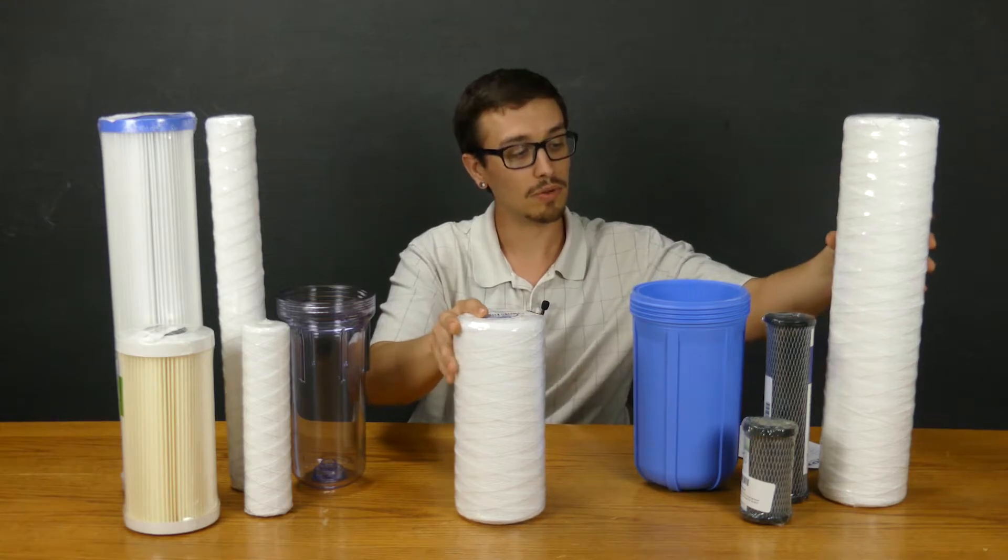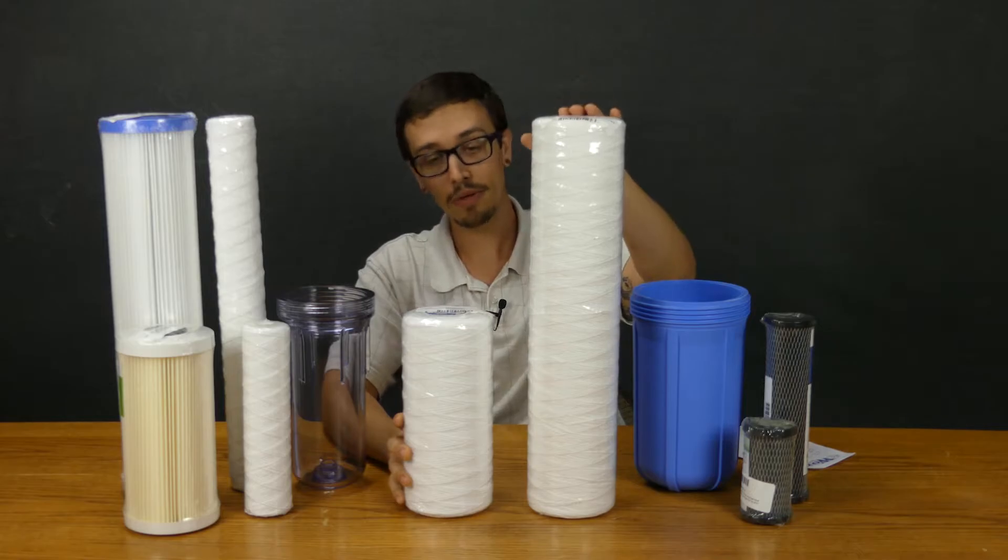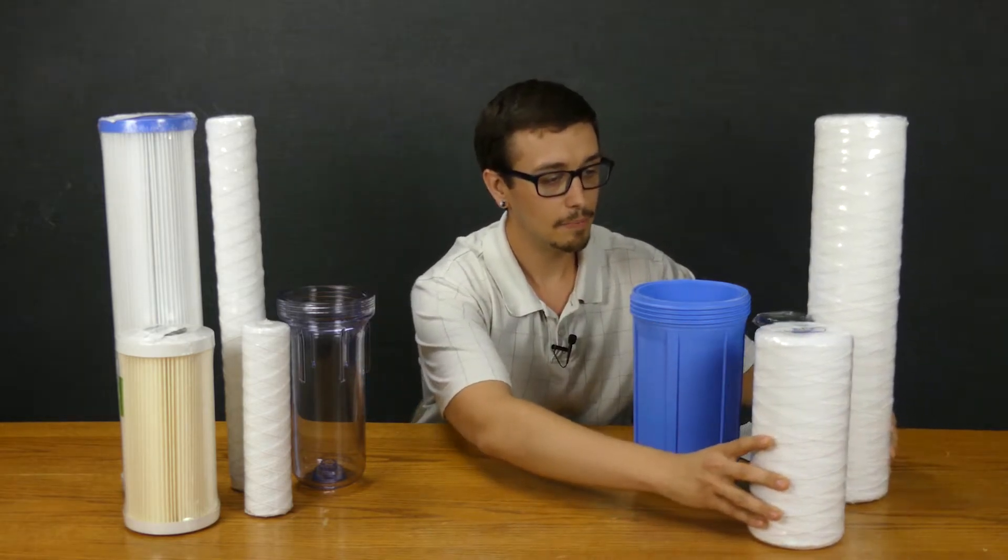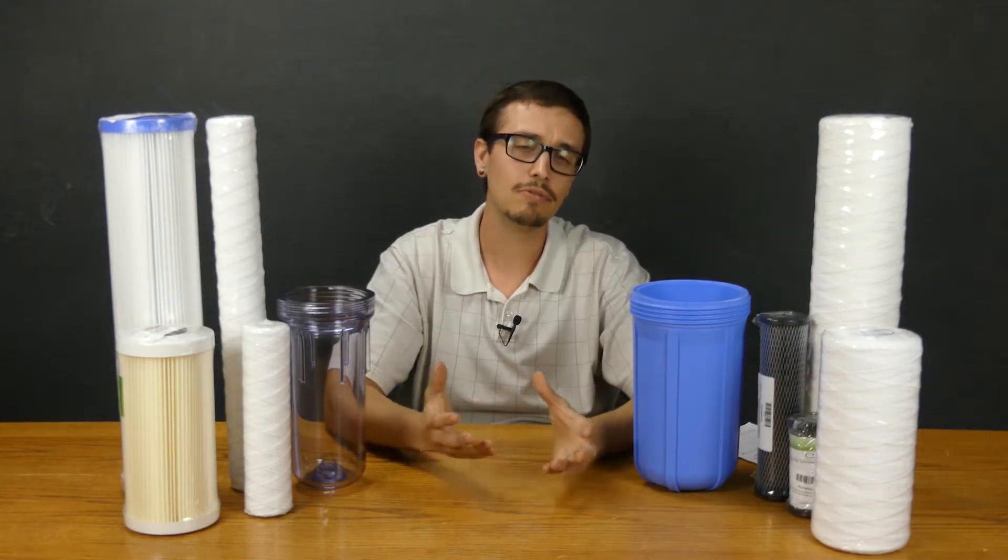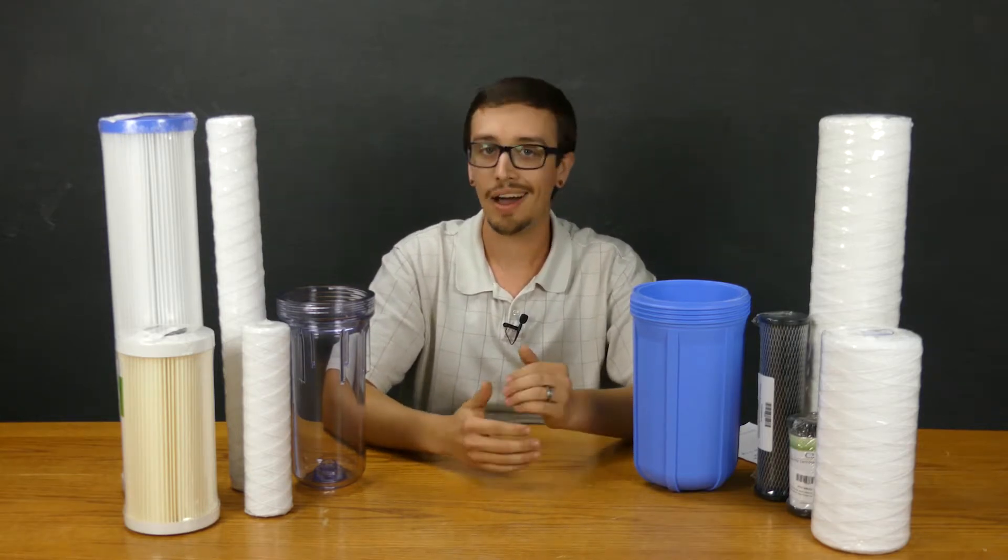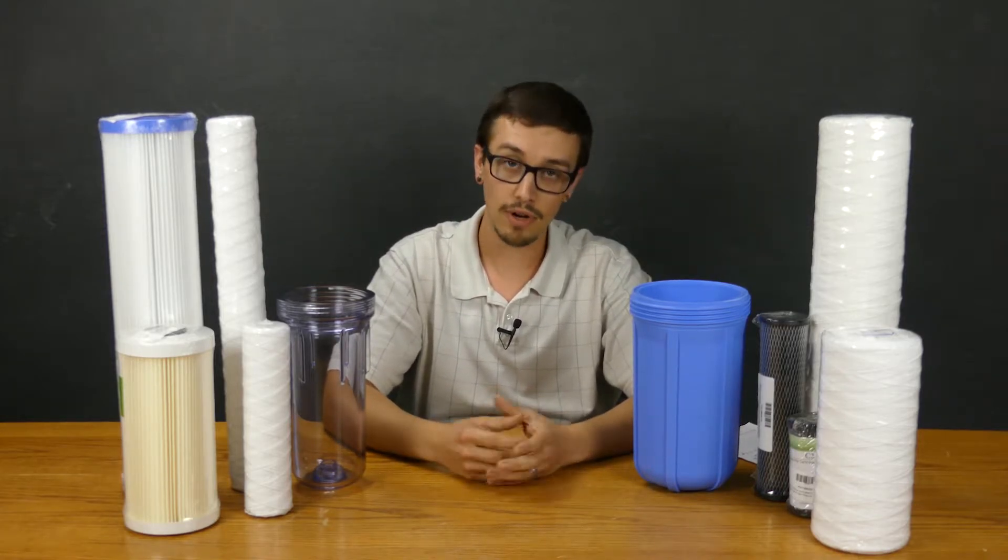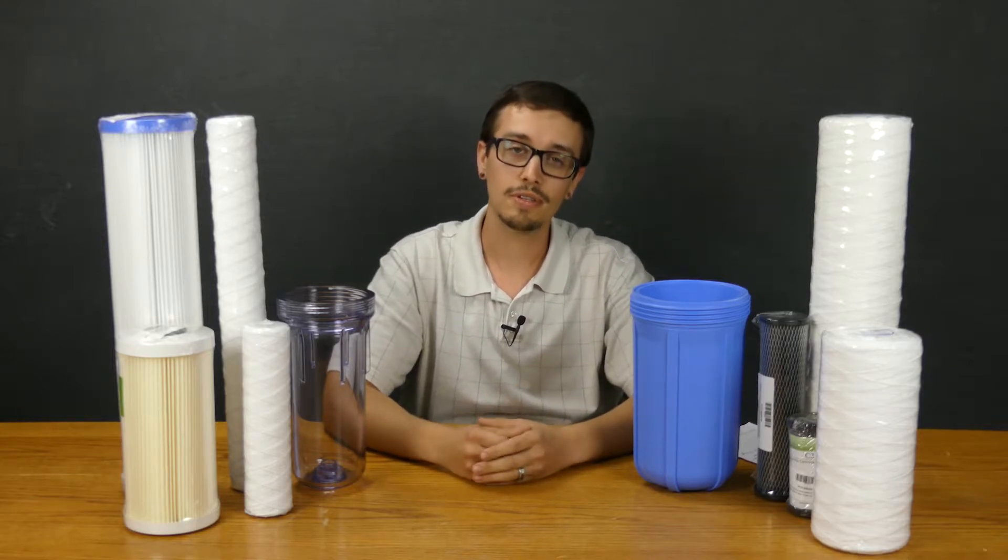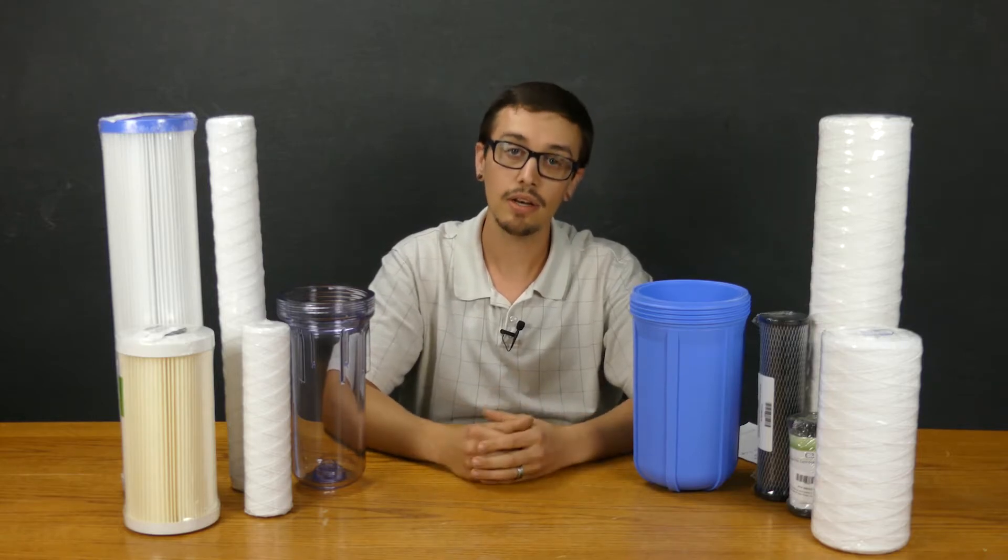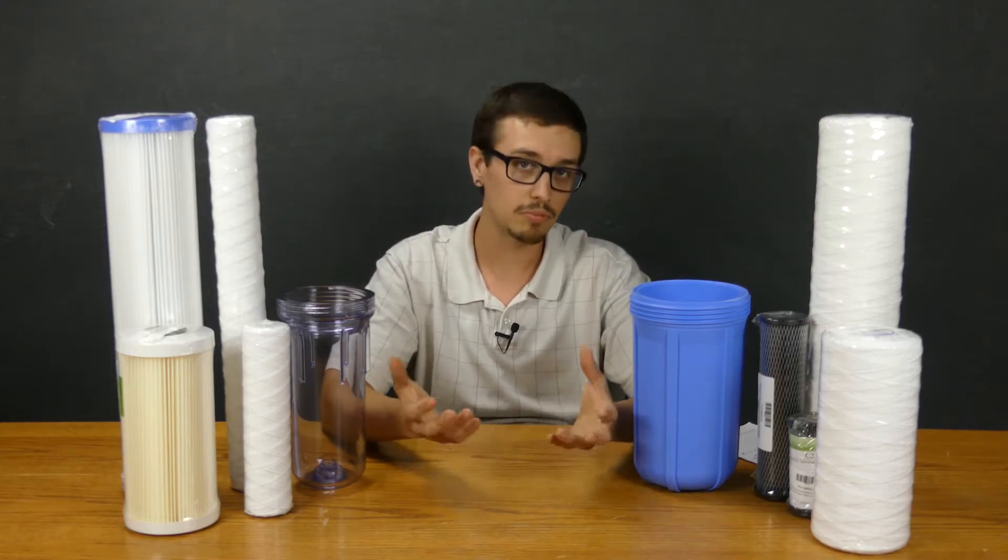The big difference between these two is size. This filter is essentially double the size of this filter. The difference in size is a characteristic of flow. If you have a higher flow system or a higher volume system, you're going to need a larger filter for a couple of reasons. First off, a larger filter is going to allow more water at one time through the filter. Secondly, a larger filter is going to have a greater capacity for holding things like sediment, debris, and buildup.